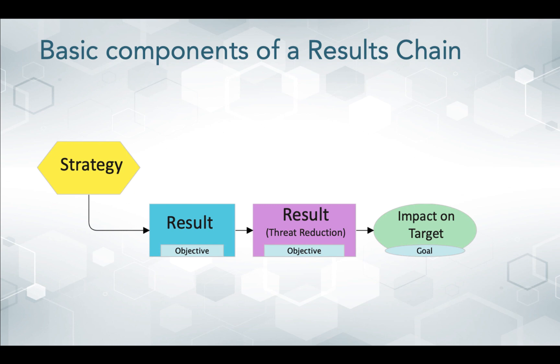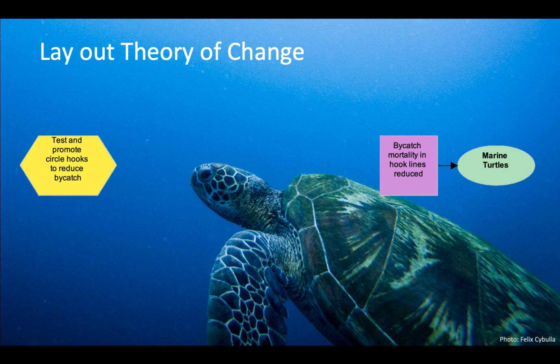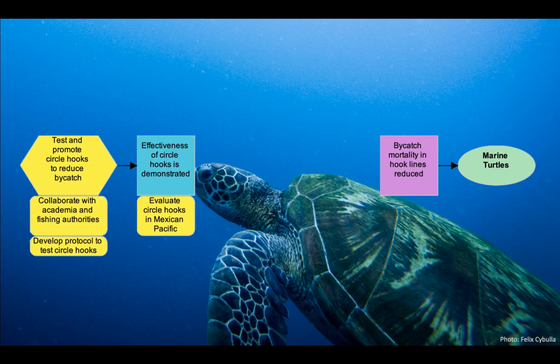In this example, our conservation target is marine turtles. Turtles are accidentally injured or killed when they migrate through fishing areas and are attracted to hooks on long lines used to catch fish. To address this threat, the team decided to test and promote circle hooks to reduce bycatch. Here in the yellow bubbles, you can see the activities that the team planned to take under this strategy and the results in the blue boxes that they expected to see. The team selected this strategy because some evidence existed in the Mexican Pacific that circle hooks may reduce both the hooking rate and the mortality of turtles hooked on long line gear.